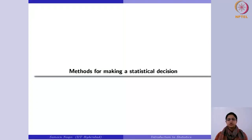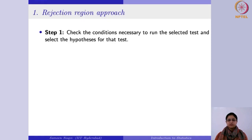Now we are going to learn about different methods for making a statistical decision. The first one is the rejection region approach. In the rejection region approach, the first step is to check the conditions which are necessary to run the test, and you will then set the hypothesis for that particular test.